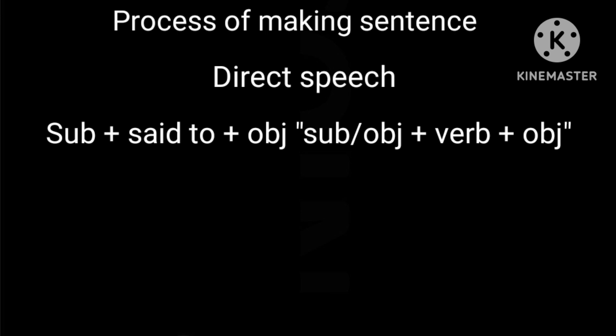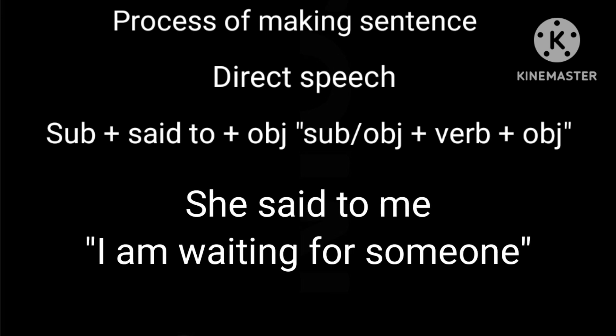Let's make a sentence according to the rules. She said to me, 'I am waiting for someone.' Here, she is the subject, then said to, then me as the object, then inverted comma open, then subject I, then am waiting — waiting is the verb — then for someone, where someone is the object, then inverted comma close. The direct speech sentence is ready according to the process.